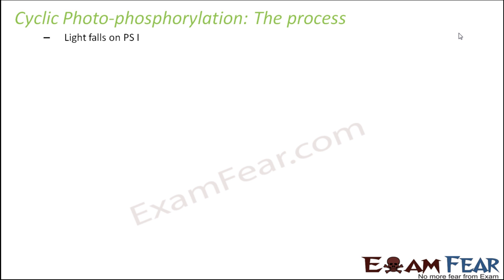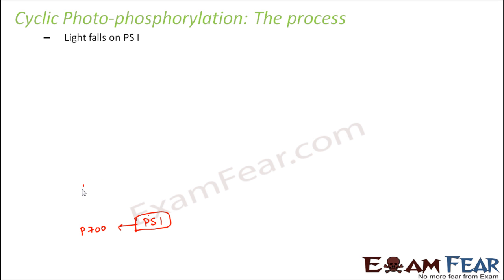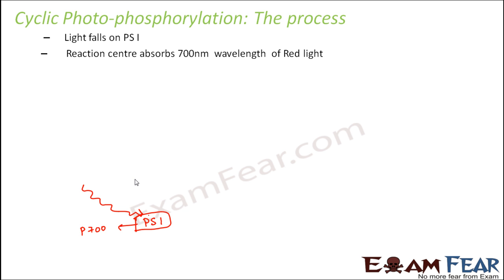Now let us look at the process of cyclic photophosphorylation. Here you have only PS1. The reaction center of PS1 has chlorophyll P700, meaning it absorbs the 700 nanometer wavelength of incident light. When light falls on PS1, the pigments of PS1 absorb those light wavelengths, and the reaction center absorbs the 700 nanometer wavelength, causing the electrons to get excited.